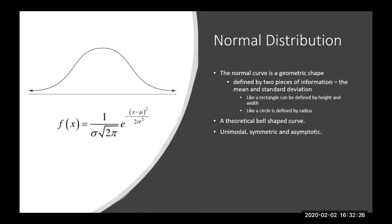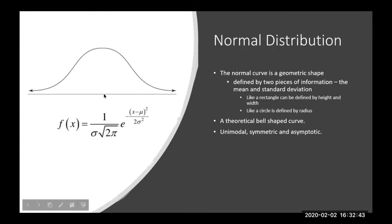The normal curve is unimodal, symmetric, and asymptotic. Unimodal means it has one mode — the mode is the most common response, and 'uni' means one — so the normal curve has one mode, which is the peak of the distribution. Symmetric means it can be folded in half and be the same on either side, like a butterfly. If we put a line down the middle, the left side looks just like the right side.